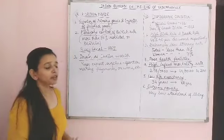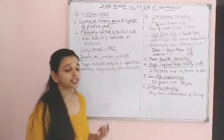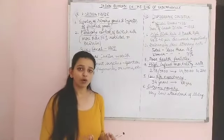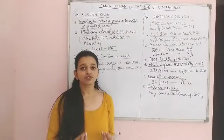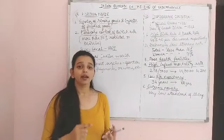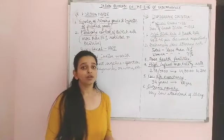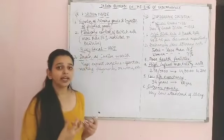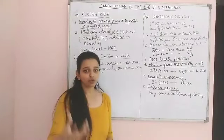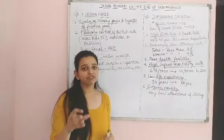The next topic is the foreign sector — foreign trade, mainly import and export related. During the British rule, the main focus was to export raw materials — agricultural goods like jute, cotton, indigo, and tea — to Britain, where Britain's industries used them as raw materials and produced finished goods.